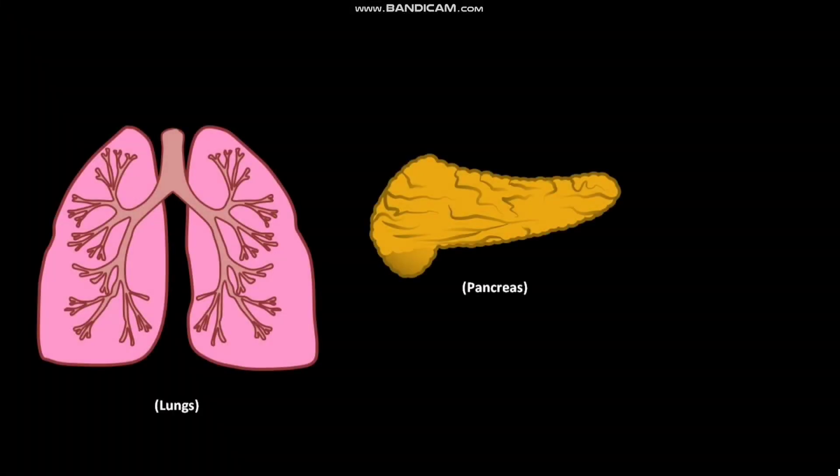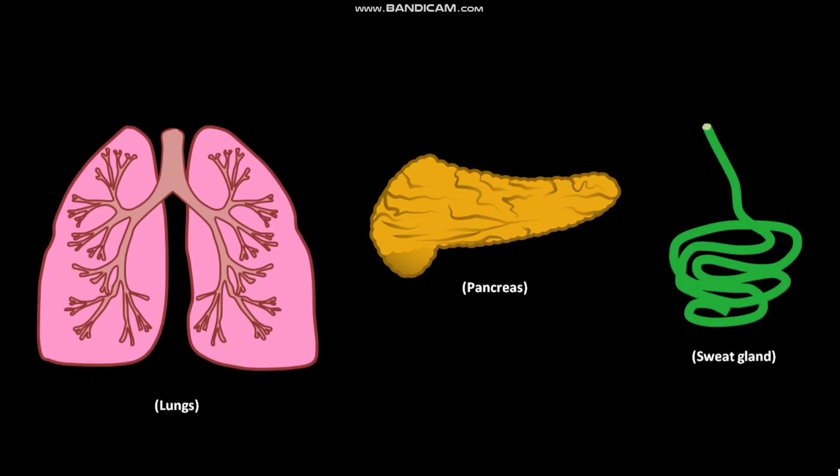In cystic fibrosis or CF, body parts like lungs, pancreas and sweat glands are most noticeably affected.